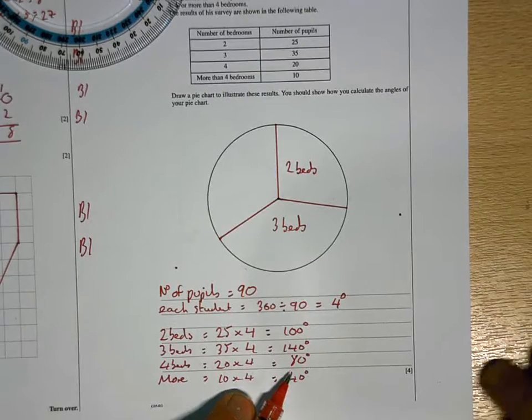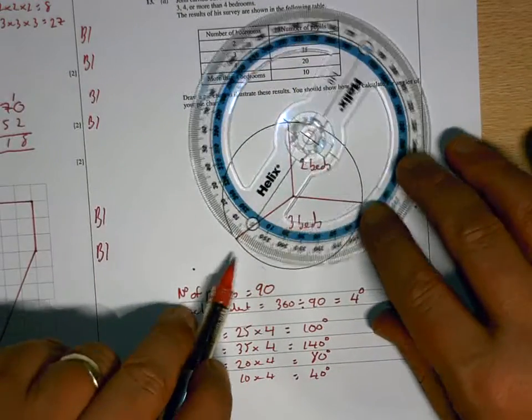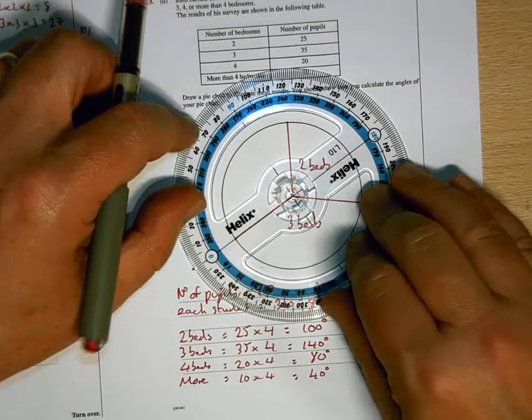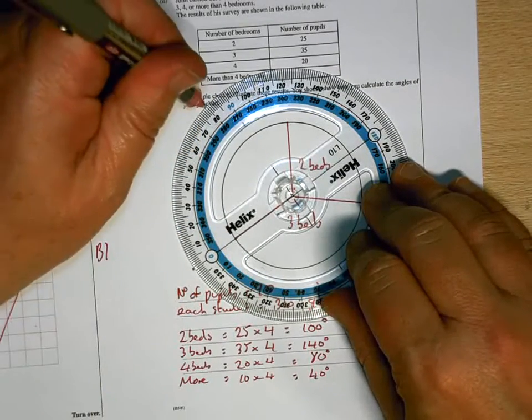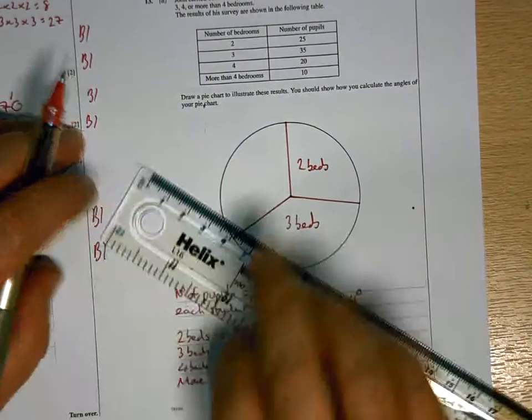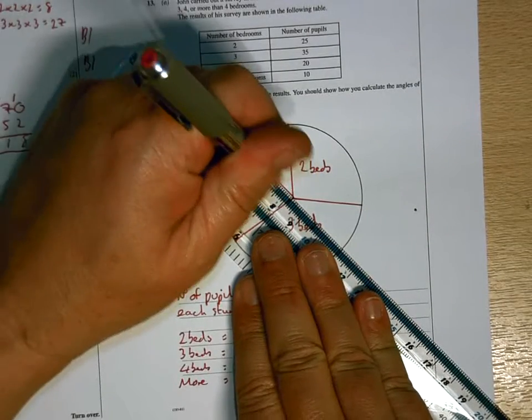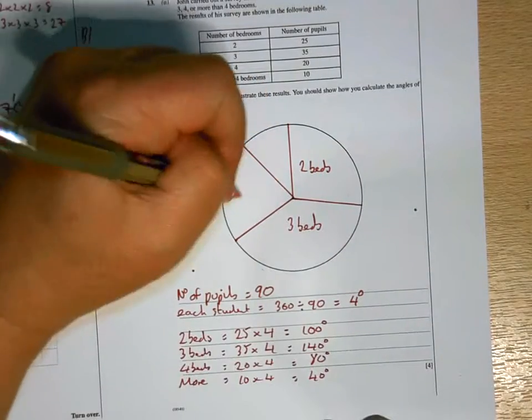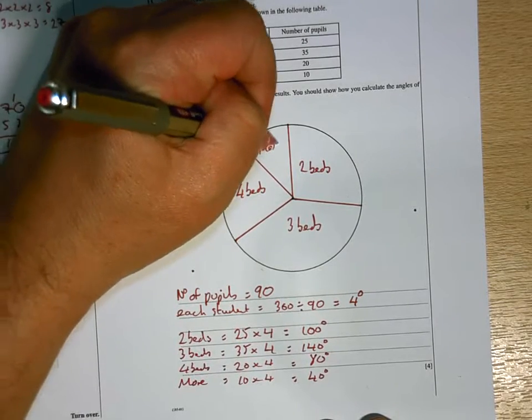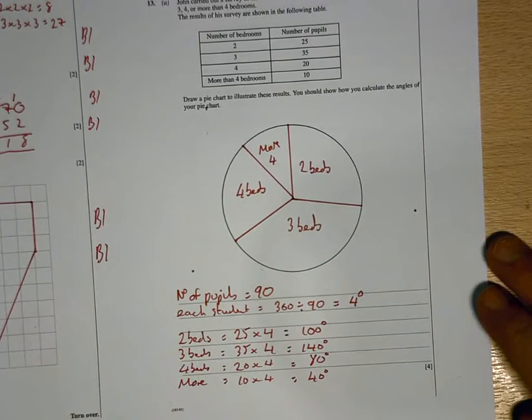The next one is 80, which is my 4 beds. So again I've got to turn my protractor now, so that 0 is on the start of the next slice. And count it around to 80, which is there. So that's 4 beds, and then what's left must be more than 4. So there you go. So there's your pie chart.